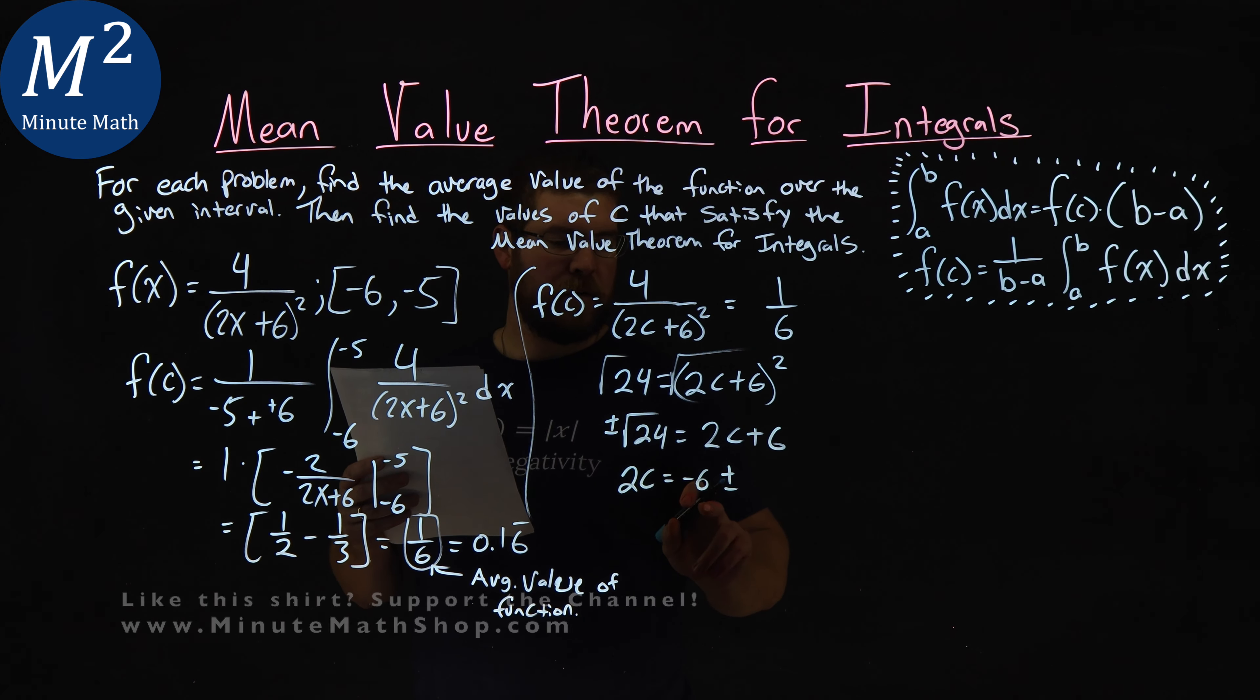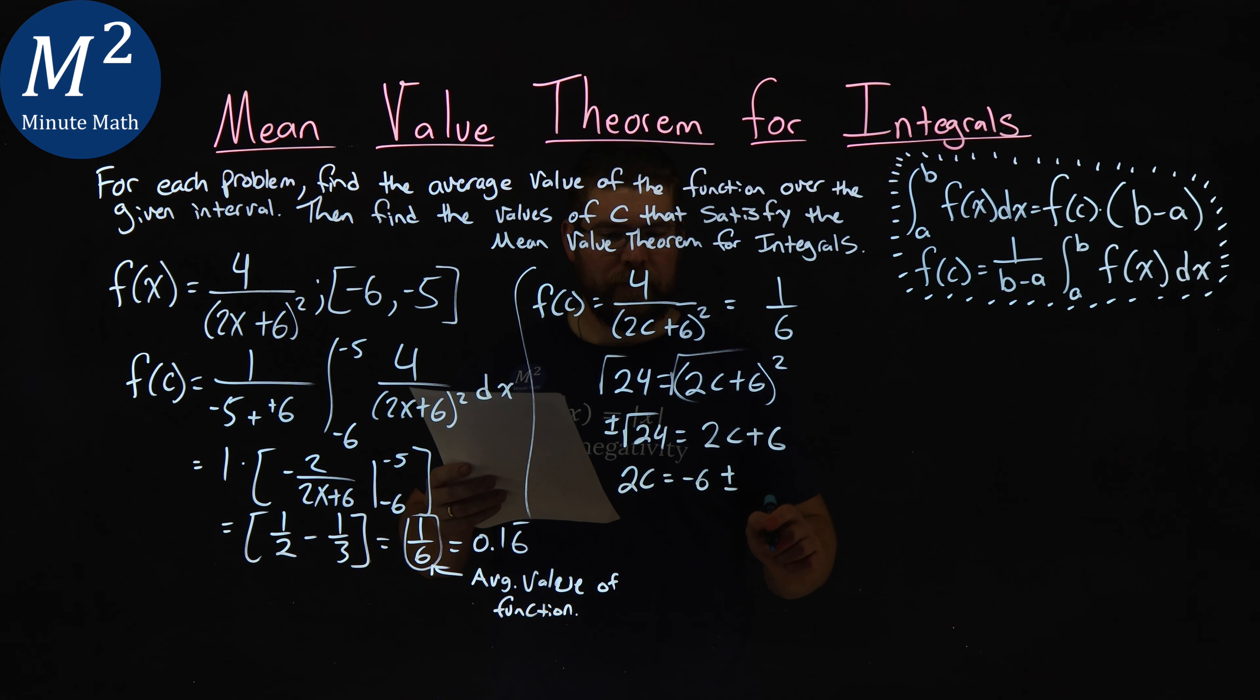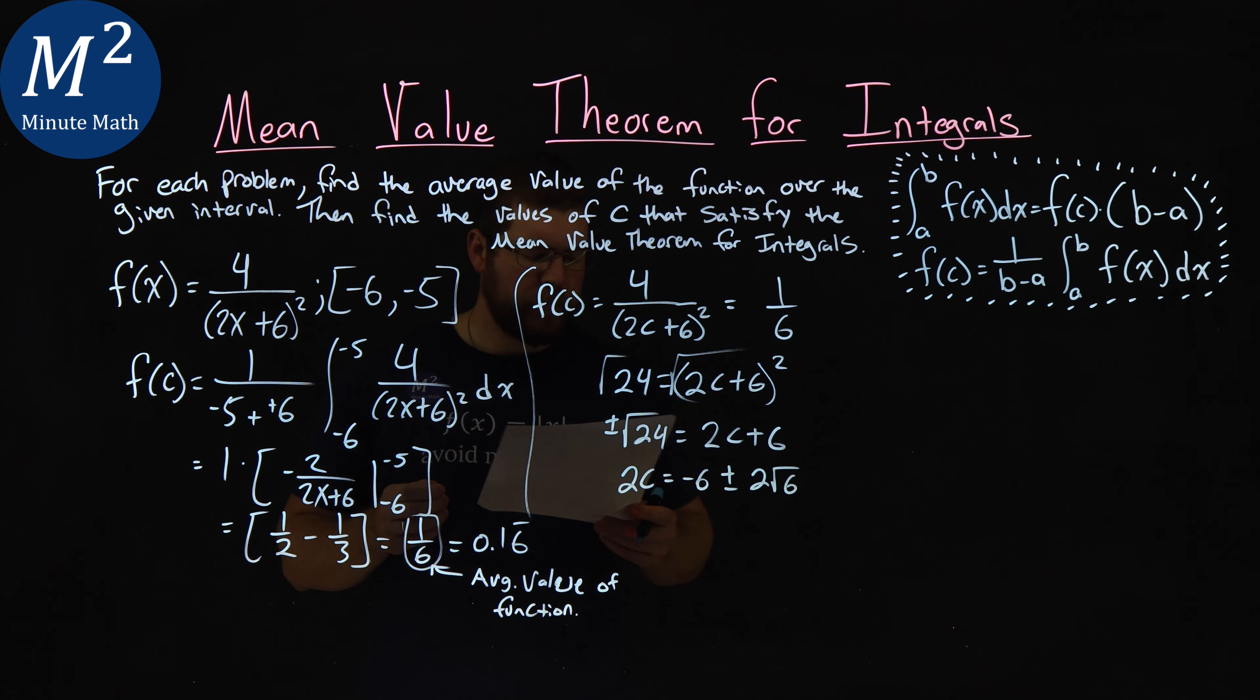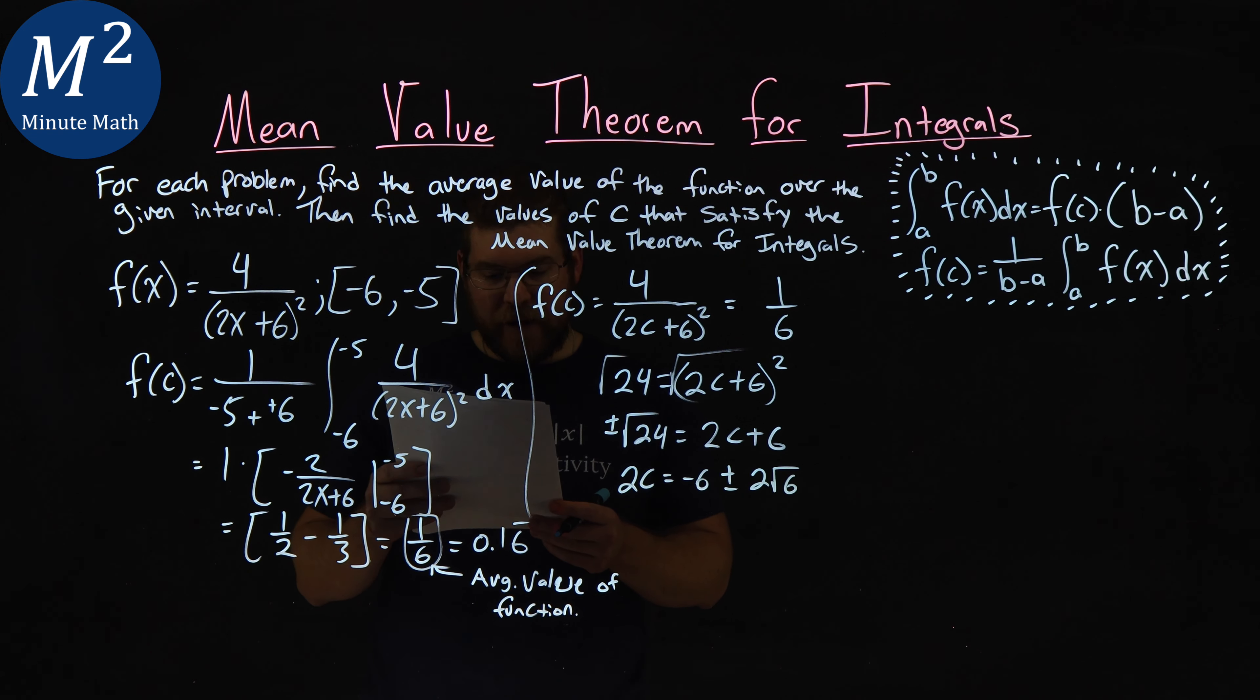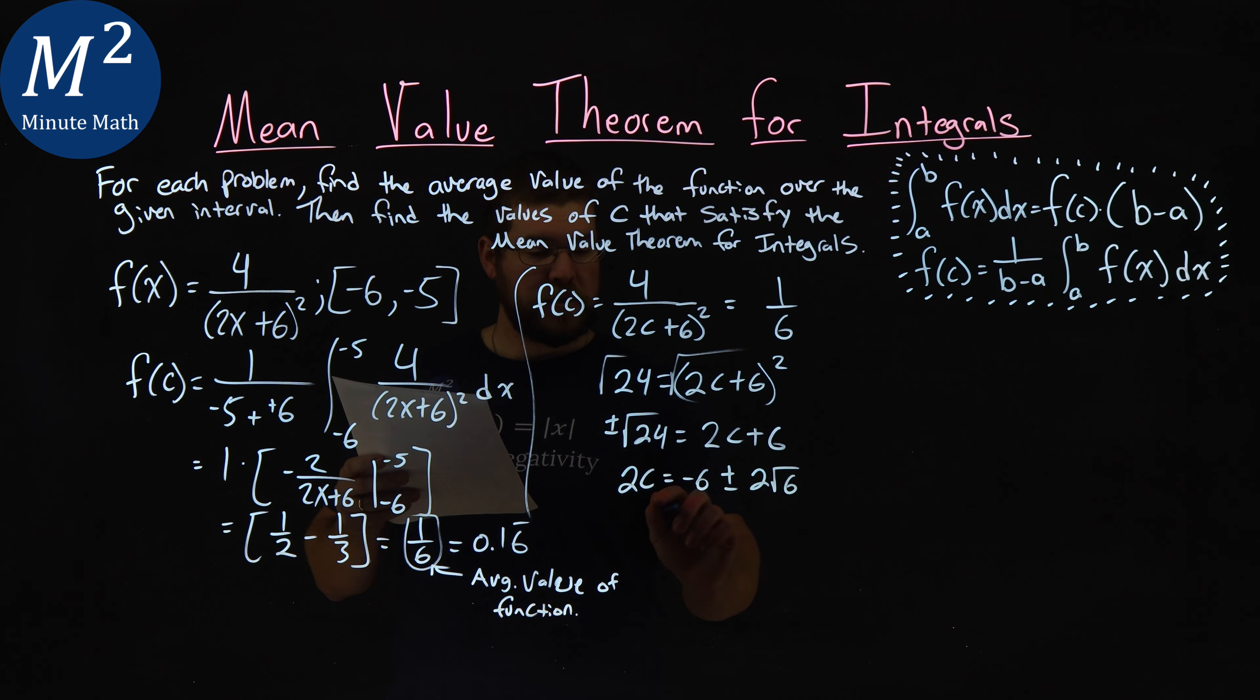So I have a 2c equals a negative 6 plus or minus, right? So let's subtract a 6 to both sides. And the square root of 24 simplifies to be a 2 square root of 6, okay? From there, we have, well, I divide both sides by 2. And c equals a negative 3 plus or minus square root of 6.